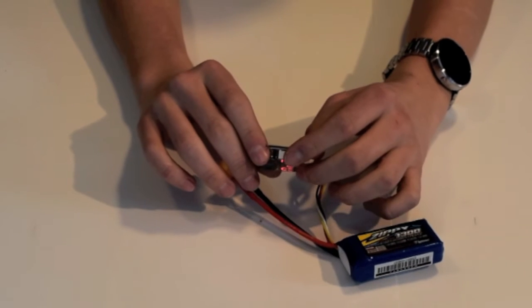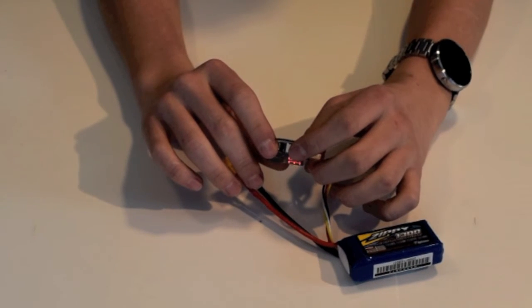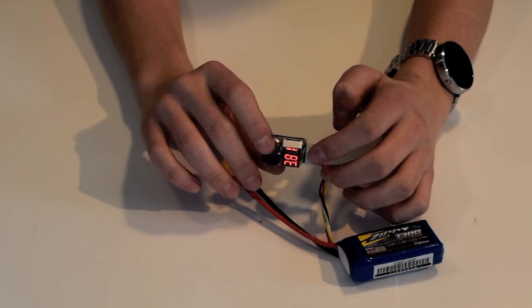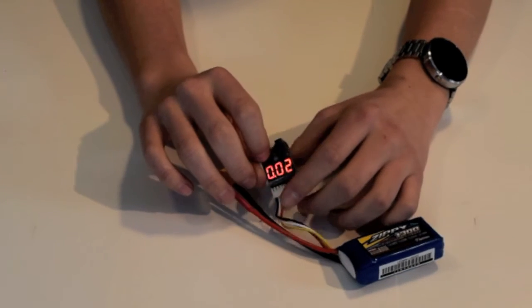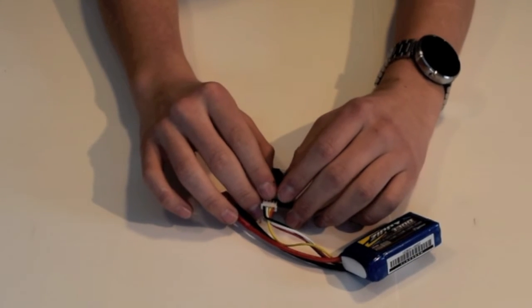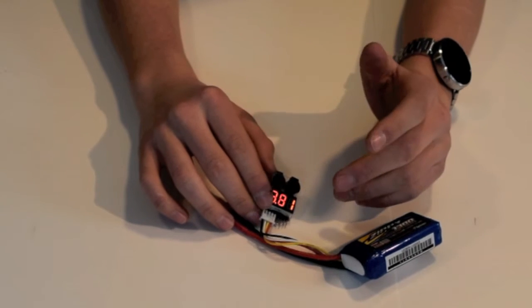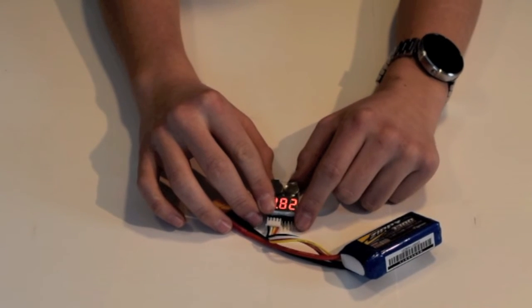But I wouldn't recommend that because by the time you're at 2.7 volts, you're going to have to drop your quad out of the sky if you don't want to damage it.